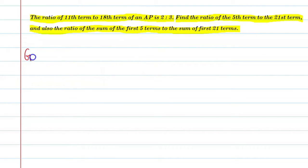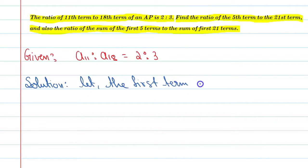First of all, we will write the given conditions. We can say given is A11 ratio A18, it is equal to 2 is to 3. Solution: Let the first term be A and the common difference be small d.